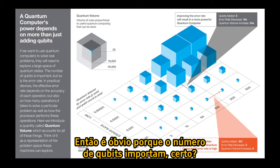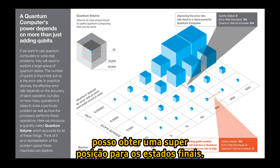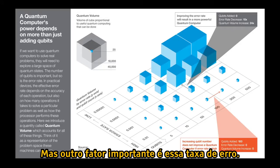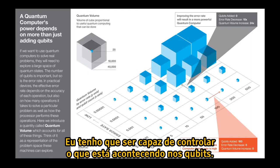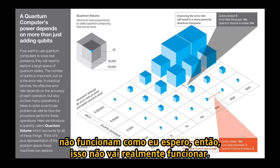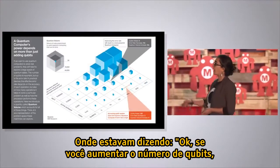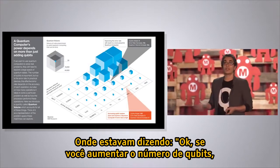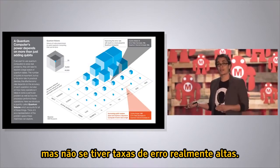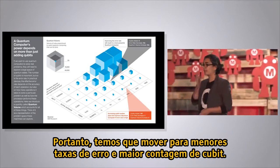It's obvious why the number of qubits matters — with more qubits I can be in a superposition of two to the n states. But another important factor is error rate. If I have really high errors and operations don't work as expected, that's not going to work. So we're promoting a new metric called quantum volume: increasing qubit count gets you higher computational power, but not if you have really high error rates. We have to move towards both lower error rates and higher qubit count.